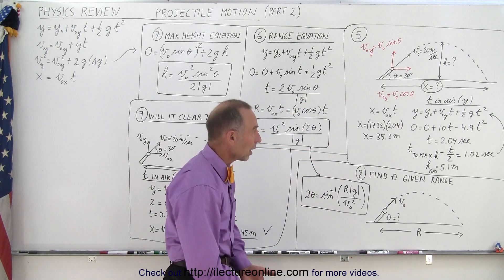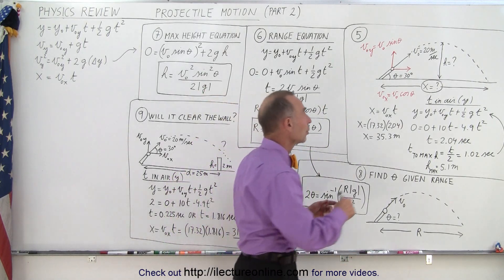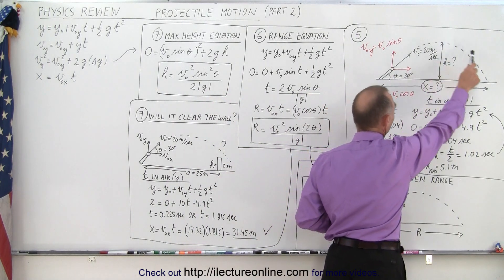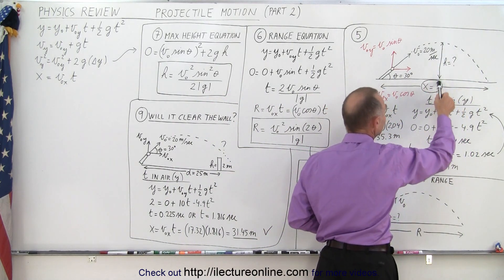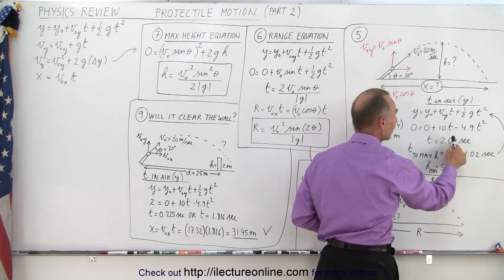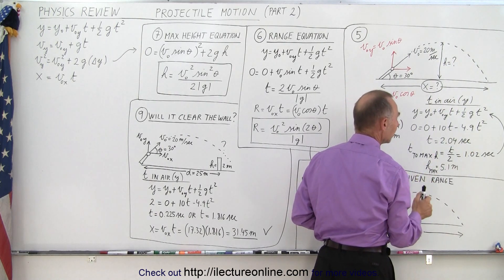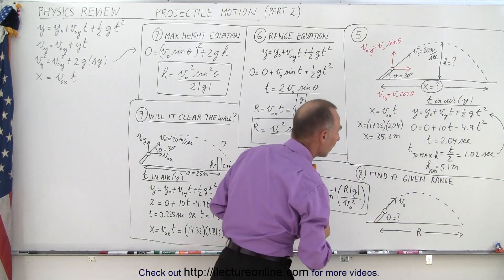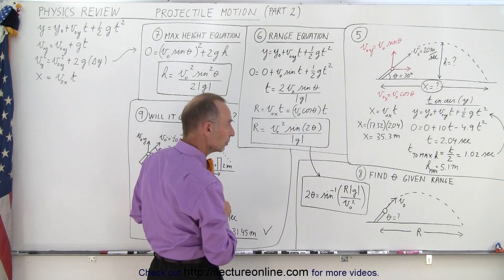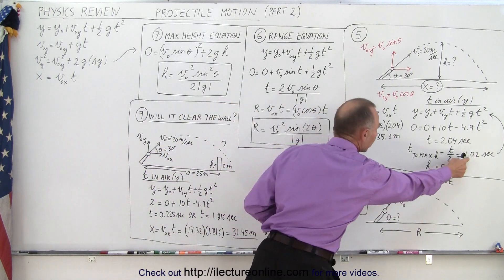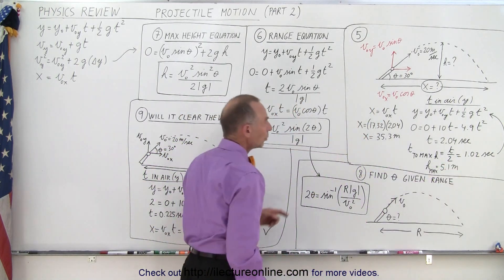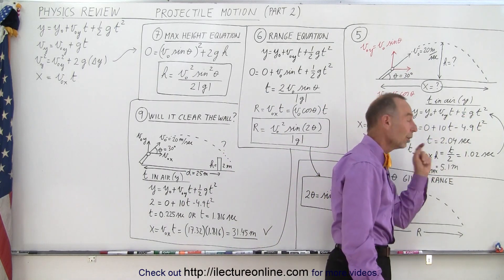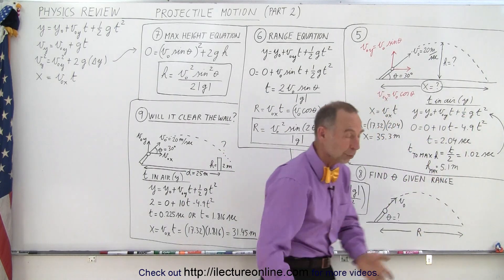If you want to know how high the projectile goes, you know that it takes just as long to get to the maximum height as it takes to come back down, so you take half the total time in the air. The time is 1.02 seconds; you plug that back into the original equation to find the height at that time, which would be 5.1 meters.